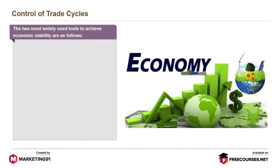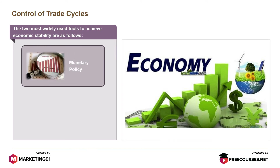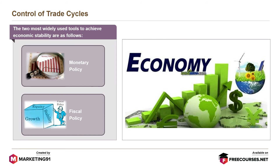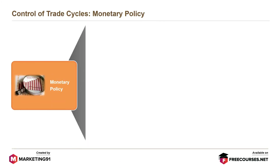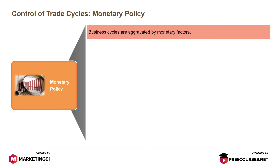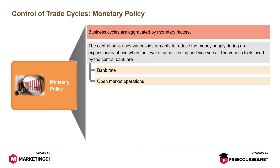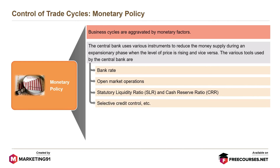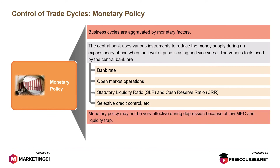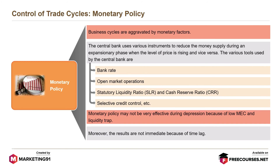The two most widely used tools to achieve economic stability are monetary policy and fiscal policy. Business cycles are aggravated by monetary factors. The central bank uses various instruments to reduce the money supply during an expansionary phase when prices are rising, and vice versa. The tools used by the central bank include bank rate, open market operations, statutory liquidity ratio (SLR), cash reserve ratio (CRR), and selective credit control. Monetary policy may not be very effective during depression due to low MEC and liquidity trap, and the results are not immediate because of time lag.